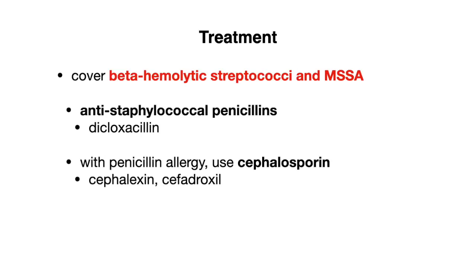In our last video we discussed how erysipelas is caused by beta-hemolytic strep in the majority of cases, and the same applies to cellulitis except we also need to consider Staph aureus, specifically MSSA. We'll need to use an anti-staphylococcal penicillin like dicloxacillin. If there is a penicillin allergy, you can also use cephalosporins like cephalexin or cefadroxil.